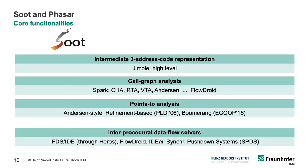What does Soot look like internally? There is an intermediate three-address code representation called Jimple, which is relatively high level. You can read Jimple code just as you could read Java code — it's fairly easy to understand and you can even write it in textual form. That is also what makes Soot very popular to some extent. Other frameworks such as Wala have a similar IR but they are not as easy to read and understand.